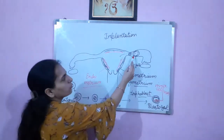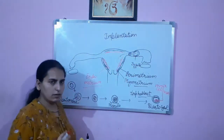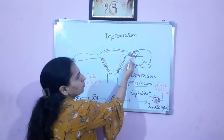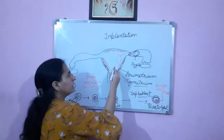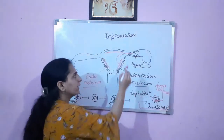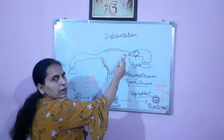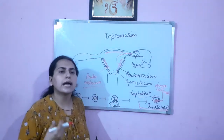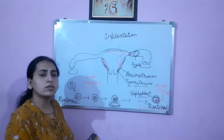This zygote has been formed and will keep on moving. Finally it has to embed in the uterus — the implantation will take place. It will keep on moving, and on the seventh day it will implant in the uterus. When it is moving, it is undergoing these changes: one cell divides into 2, then 4 blastomeres, then 8, then 16, then 32, and finally a stage comes that is known as blastocyst. That blastocyst will get implanted.